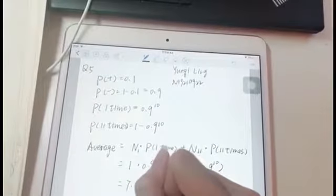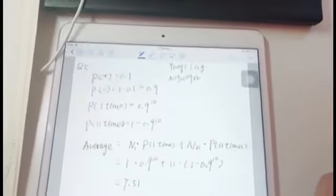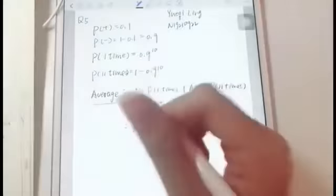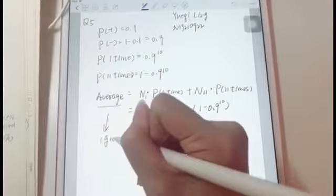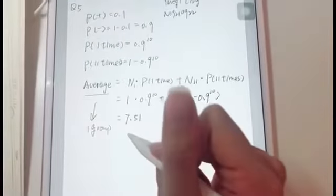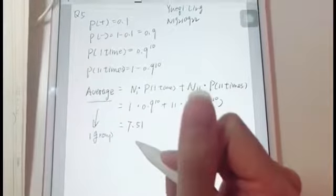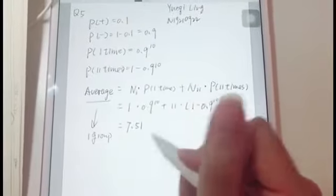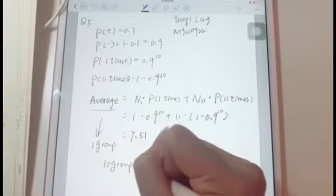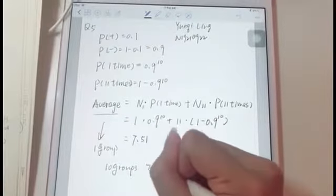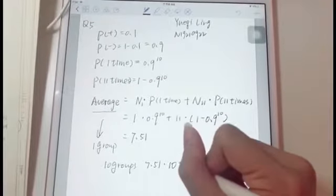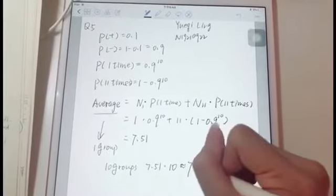7.51, and this is the average for one group. We have divided 100 people into 10 groups, so the 10 groups will be 7.51 multiplied by 10, which equals close to 75 times.